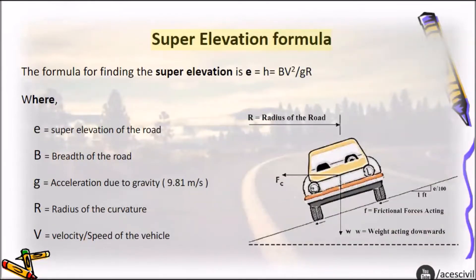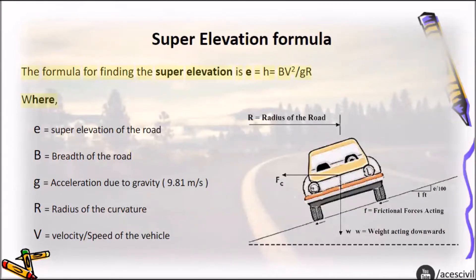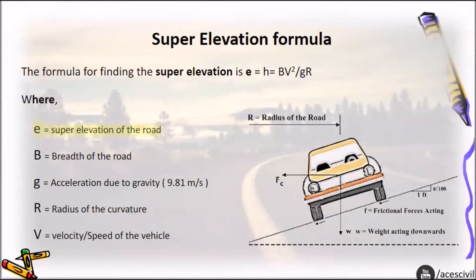Super elevation formula: The formula for finding the super elevation is E = H = BV² / GR, where E equals super elevation of the road.